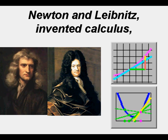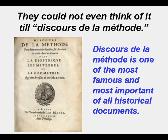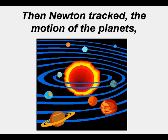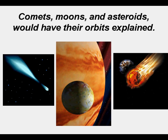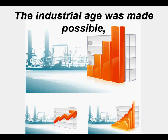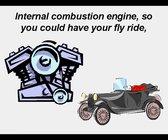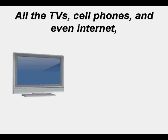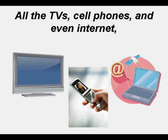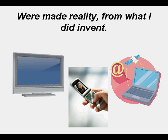Newton and Leibniz invented calculus. The motion of the planets, comets, moons, and asteroids would have their orbits explained. The industrial age was made possible — internal combustion engines so you could have your flight right. All the TV, cell phones, and even the internet were made reality from what I did invent.